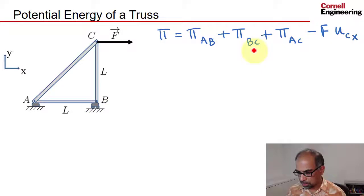Then I subtract out the work done by the external force. The external force is acting in the x direction, so the work done by it is the magnitude of the force times how much pin C displaces in the x direction, which I've written as UC_X.